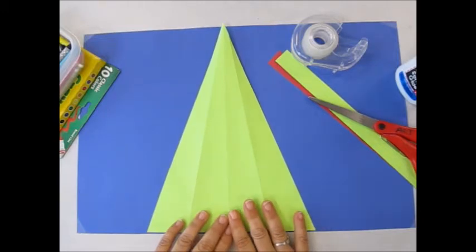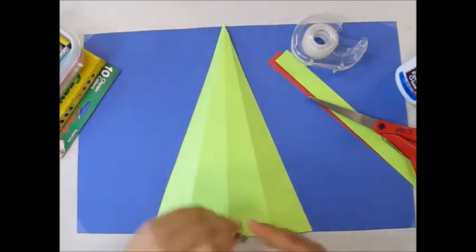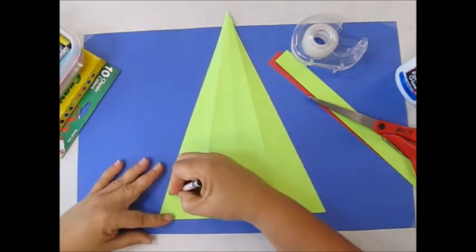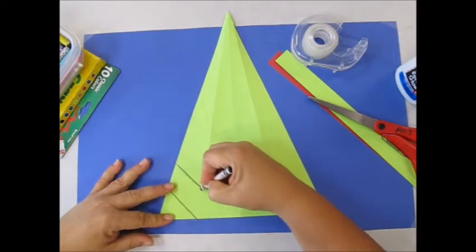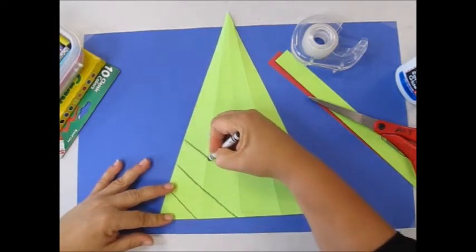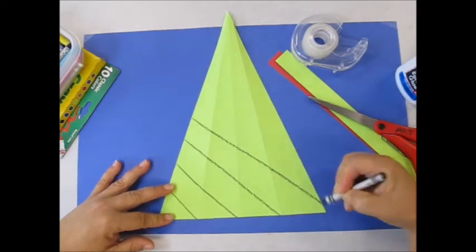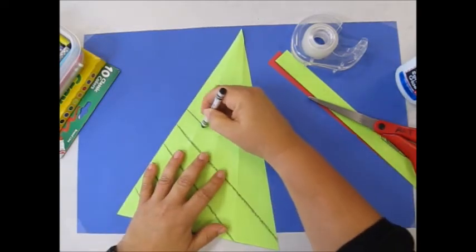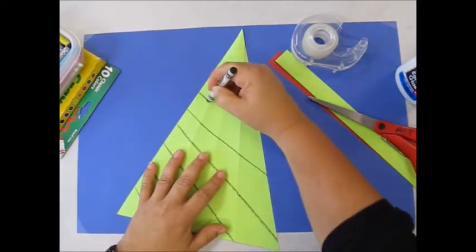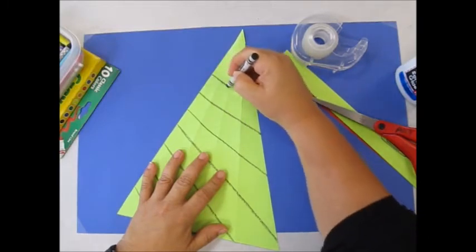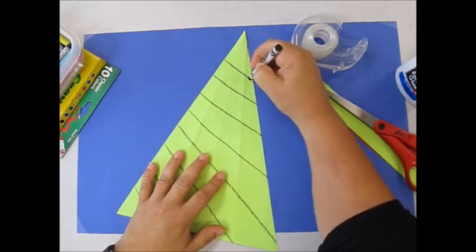Before I do anything else I am going to add a pattern to my triangle. A pattern is lines and shapes and colors that repeat themselves. A lot of lizards have a pattern, they have texture on them, so we're going to make patterns on our lizards.